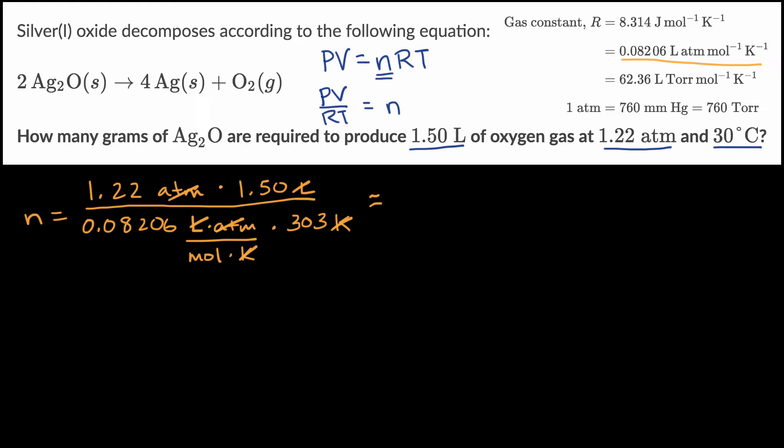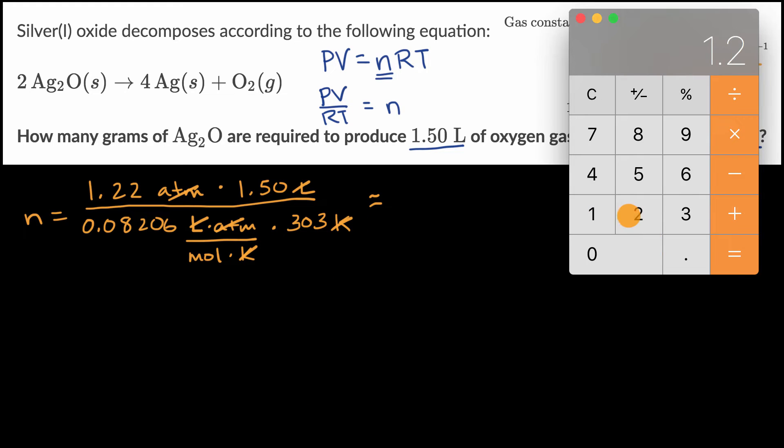This is approximately equal to 1.22 times 1.5 divided by 0.08206, then divide by 303. We have three significant figures here.